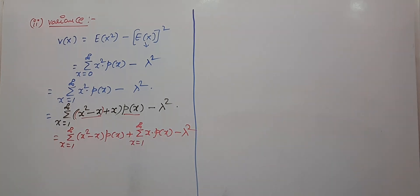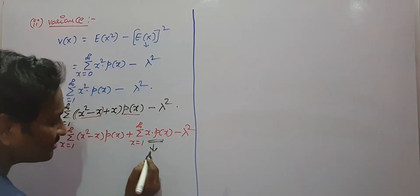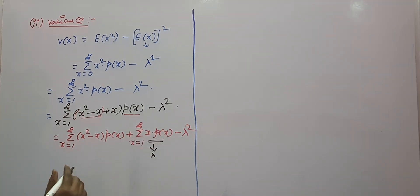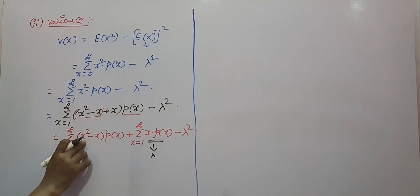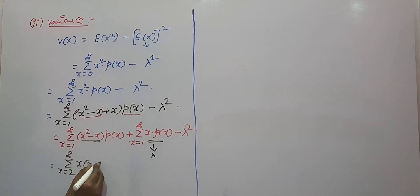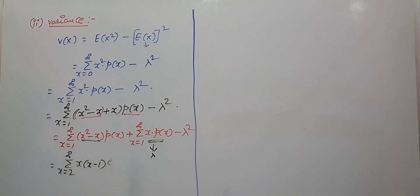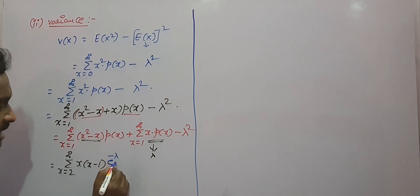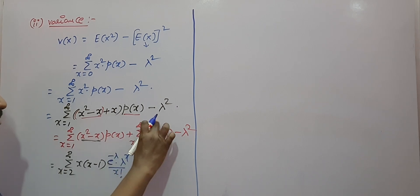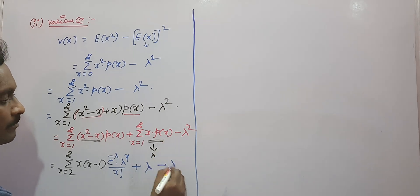The second summation, x·P(x) from x = 1 to infinity, is the mean of the Poisson distribution, which equals λ. When x = 1, the first term of x(x−1)·P(x) is zero, so we start that sum from x = 2. Substituting P(x) = e^(−λ)·λ^x / x!, we write x! = x·(x−1)·(x−2)!, so x(x−1) cancels, leaving e^(−λ)·λ^x / (x−2)! plus λ minus λ².